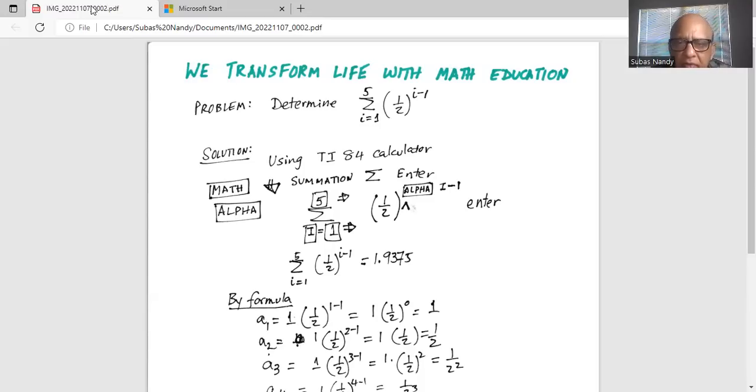And then we go to the top and we enter there in the box 5, and then right scroll button. And then half in parenthesis and then exponent sign alpha and we will select exponent as i minus 1 and enter.